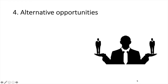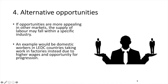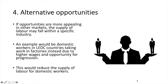Fourth is the attractiveness and availability of alternative opportunities. If opportunities are more appealing in other markets, the supply of labour may fall within a specific industry. An example would be domestic workers in less economically developed countries taking work in factories instead, due to higher wages and opportunity for progression. This would reduce the supply of labour for domestic workers.